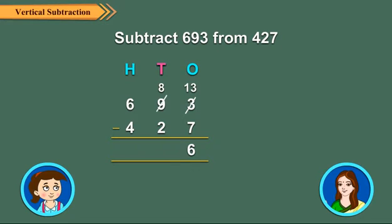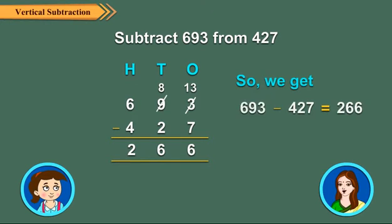Subtract the 10's. 8 minus 2 is equal to 6 10's. Write 6 under the 10's column. Subtract the 100's. 6 minus 4 is equal to 2 100's. Write 2 under 100's column. So, we get 693 minus 427 is equal to 266.